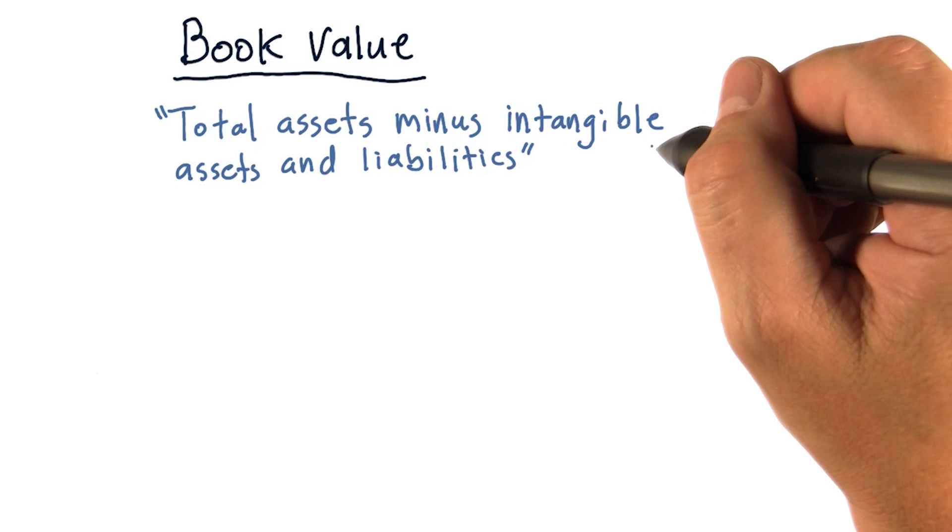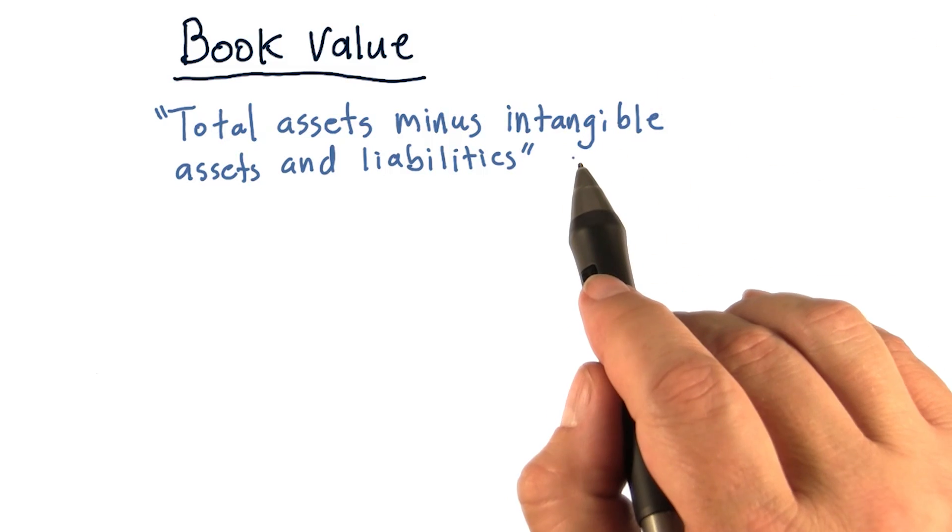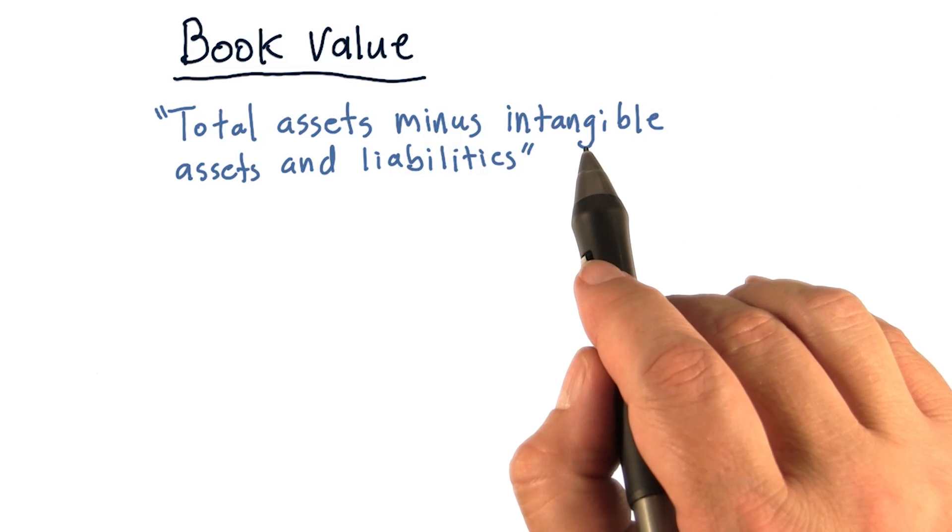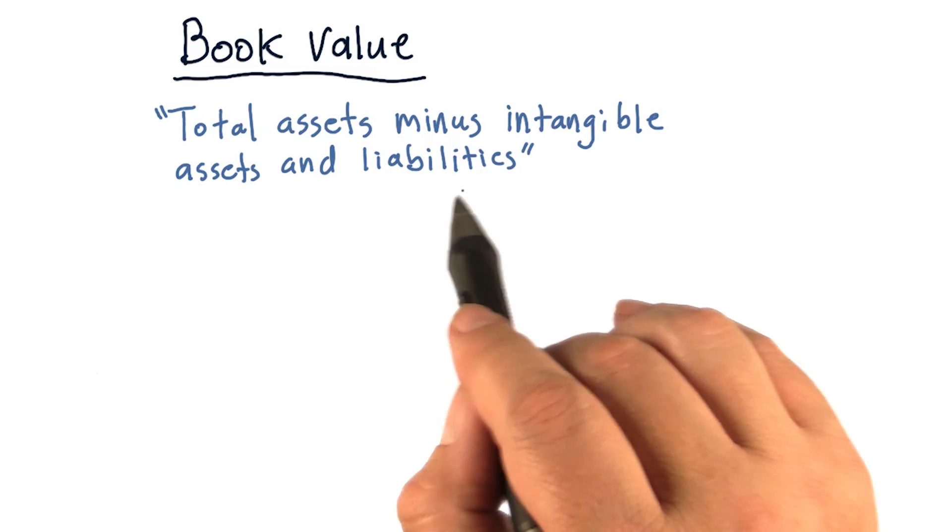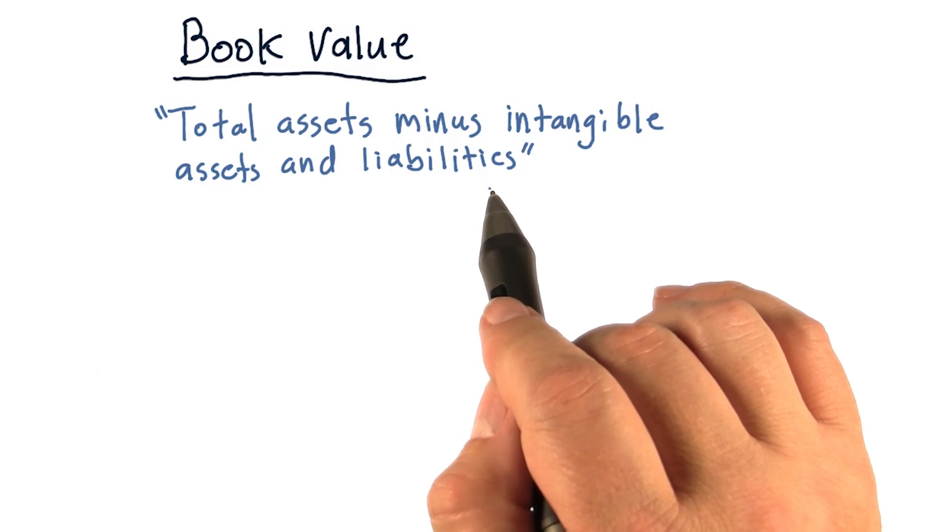So intangible assets are things that are difficult to put a price on. They're things like the value of a brand or a patent. Liabilities are a little bit easier to calculate. Those are just things like loans that are owed and so on.